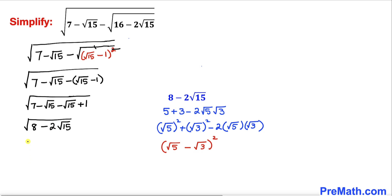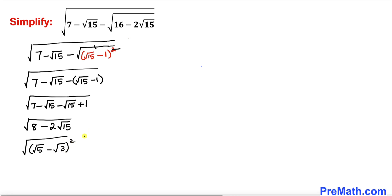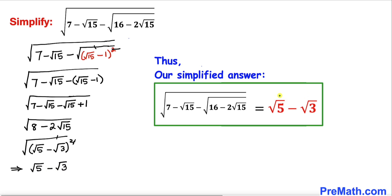So we can write the square root of the whole thing as the square root of square root of 5 minus square root of 3, whole squared. The square and the square root undo each other, so our simplified answer turns out to be square root of 5 minus square root of 3.